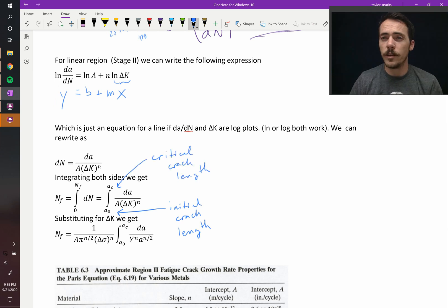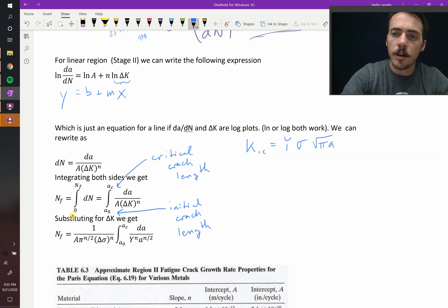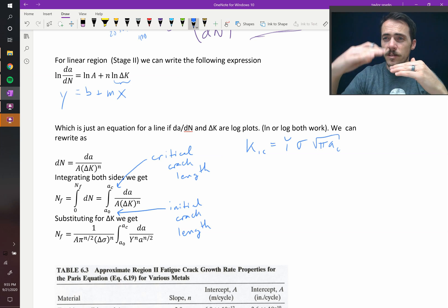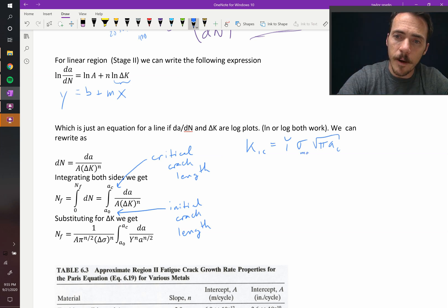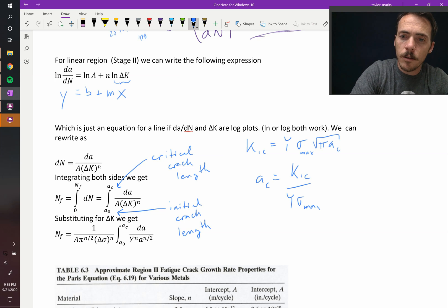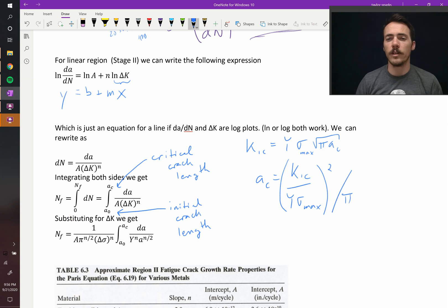Now, how do we know what the critical crack length is? We use Griffith-Fractor equation, which we learned earlier. Remember this. We said that K1C is equal to Y sigma multiplied by pi times A critical. In other words, we could rearrange this for cyclic stress. Since this cycle is cycling back and forth, this is going to be the maximum stress right there. And we could solve for it. We would say that our critical crack length is equal to K1C over Y sigma max. This whole thing is squared and then divided by pi. That will give us our critical crack length.